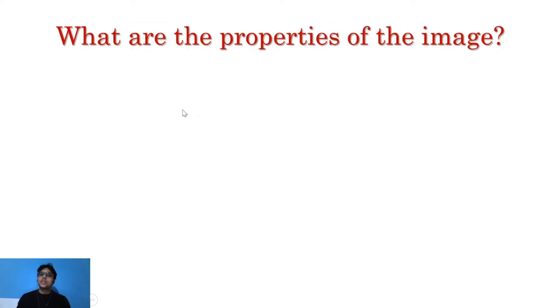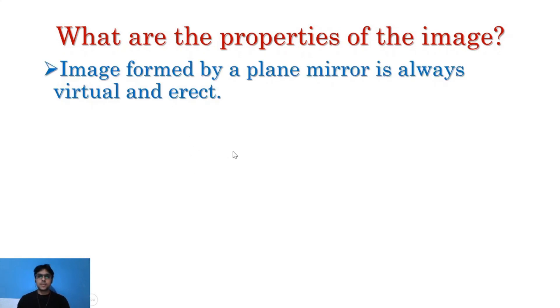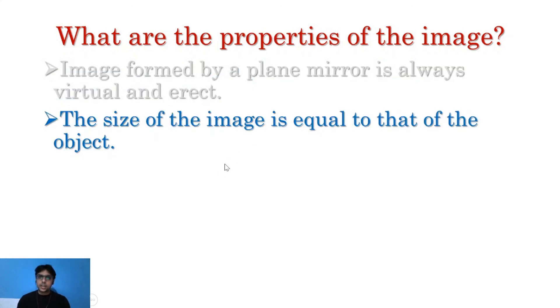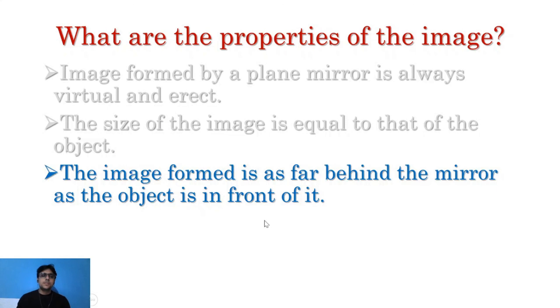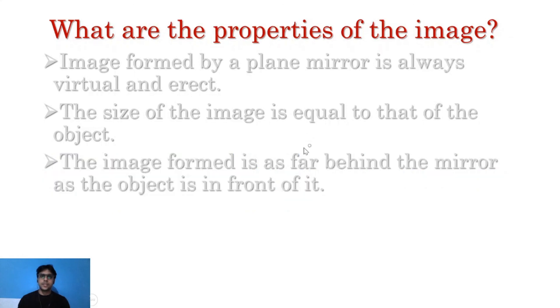So what are the properties of the image we just discussed? First property: image formed by a plane mirror is always virtual and erect. Second property: the size of the image is equal to that of the object. Obviously, the distance is as discussed. And the last one: the image is laterally inverted. Simple.